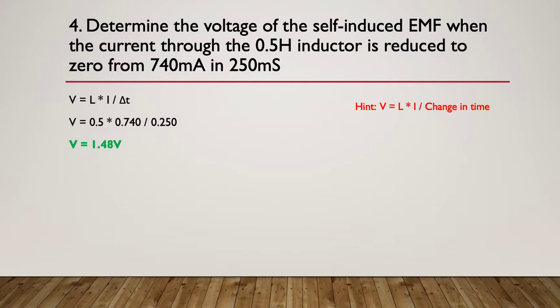So here we go: the voltage is the inductance multiplied by the current divided by the change in time. In this particular case, we went from 250 milliseconds to zero, so the change in time is 250 milliseconds or 0.25 of a second. Our inductance was already 0.5 of a henry, and we had 740 milliamps or 0.74 of an amp. Multiply those three things together, and in this particular case we get 1.48 volts.